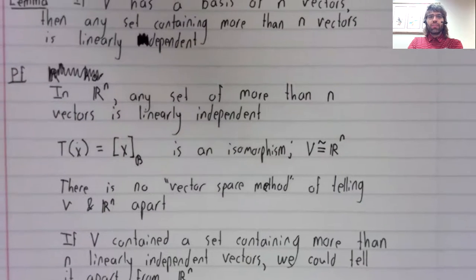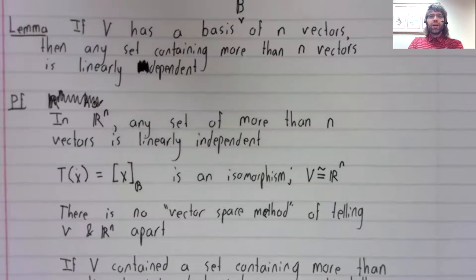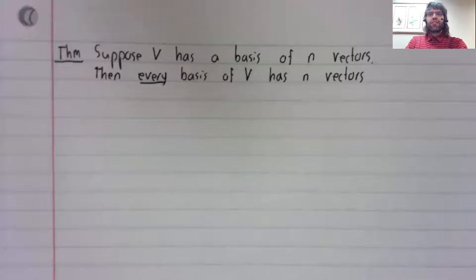With this lemma out of the way, proving the theorem we actually care about will be a piece of cake. A vector space cannot have two different sized bases. If V has one basis with N vectors in it, then every basis of V has N vectors in it.